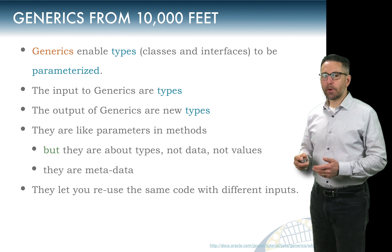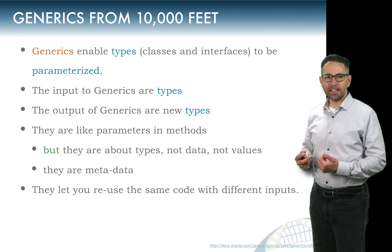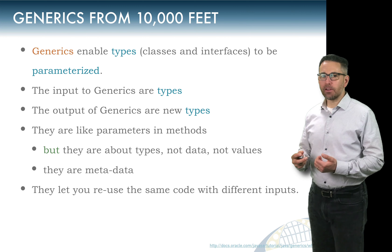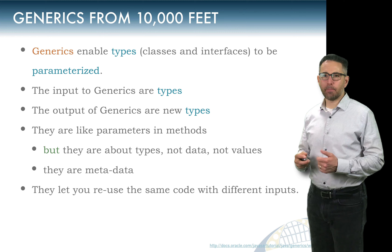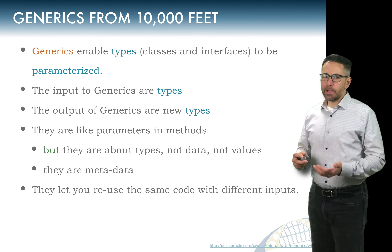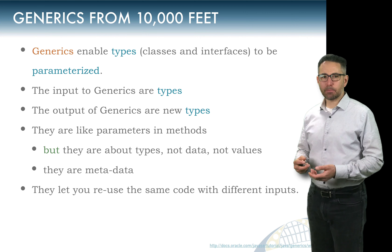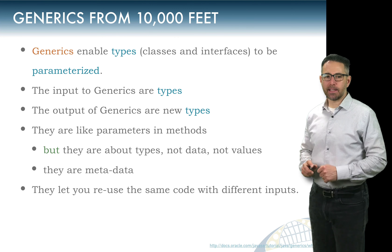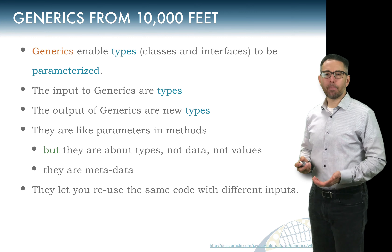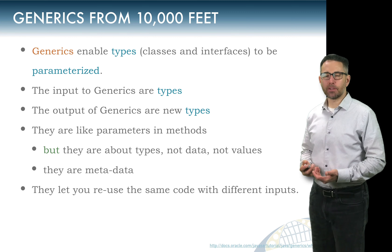Generics are a little bit like parameters in methods. Parameters are a way for methods to take in data, but generics are different because they're not about data — they're about type. They are not about the values; they're about the type of the values. In that way, you can really call them metadata — information about the data. They let us reuse the same code with different kinds of data inputs, because we've described the type inputs in a consistent way.